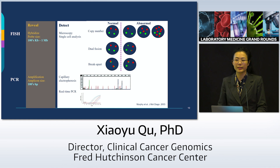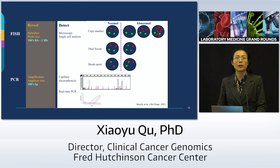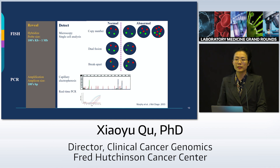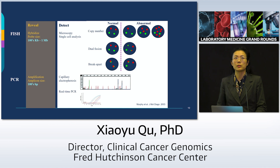For single-target assays, I'd like to compare and contrast FISH — fluorescent in situ hybridization — versus PCR. In a FISH assay, we reveal the abnormality via hybridization, using probes in the size range of hundreds of kilobases to a megabase pair. In contrast, PCR uses amplification, and what we see is an amplicon, with amplicon sizes in the range of 100 base pairs. This is a very big difference in size between a probe and a PCR amplicon.